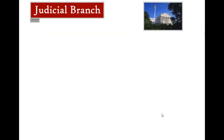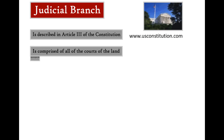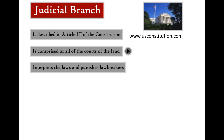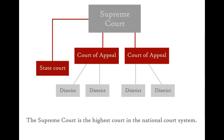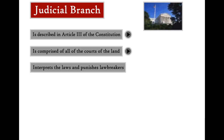The Judicial Branch is described in Article III of the Constitution and is comprised of all of the courts of the land. The Supreme Court is the highest court in the national court system. The courts that sit below the U.S. Supreme Court are called the U.S. Courts of Appeals. A Court of Appeals hears challenges to district court decisions from courts located within its circuit. The nation's 94 district or trial courts are called U.S. District Courts. The Judicial Branch also interprets the laws and punishes lawbreakers.